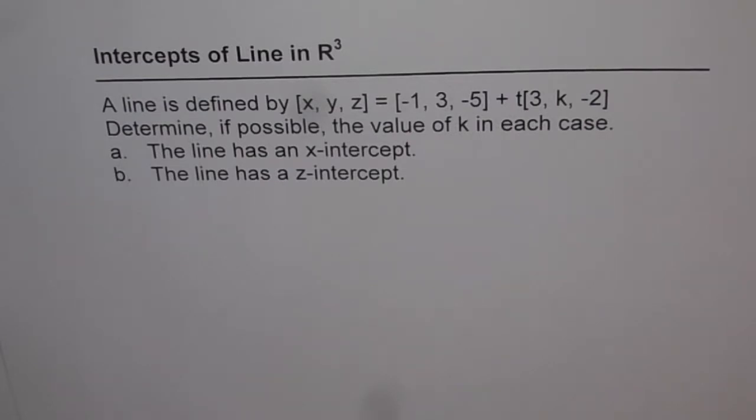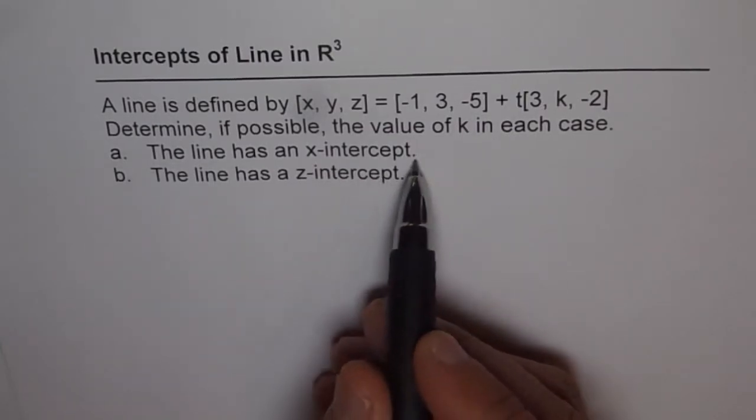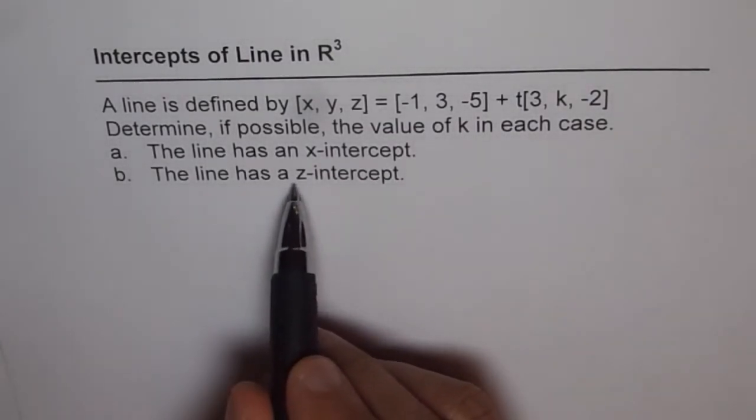a line is defined by [x, y, z] = [-1, 3, -5] + t[3, k, -2]. Determine, if possible, the value of k in each case. The line has an x-intercept, and the line has a z-intercept.